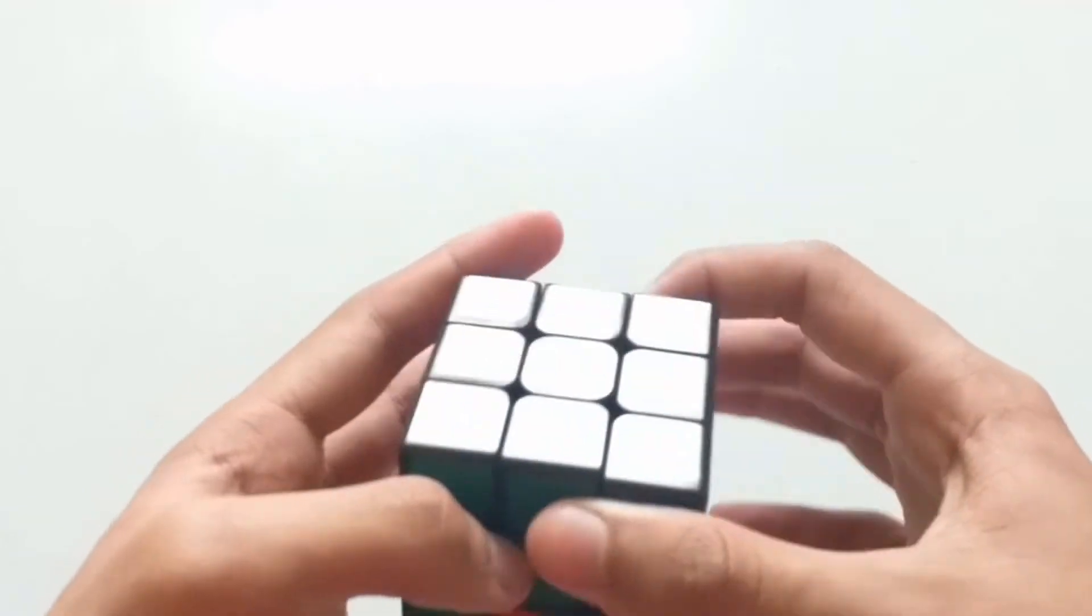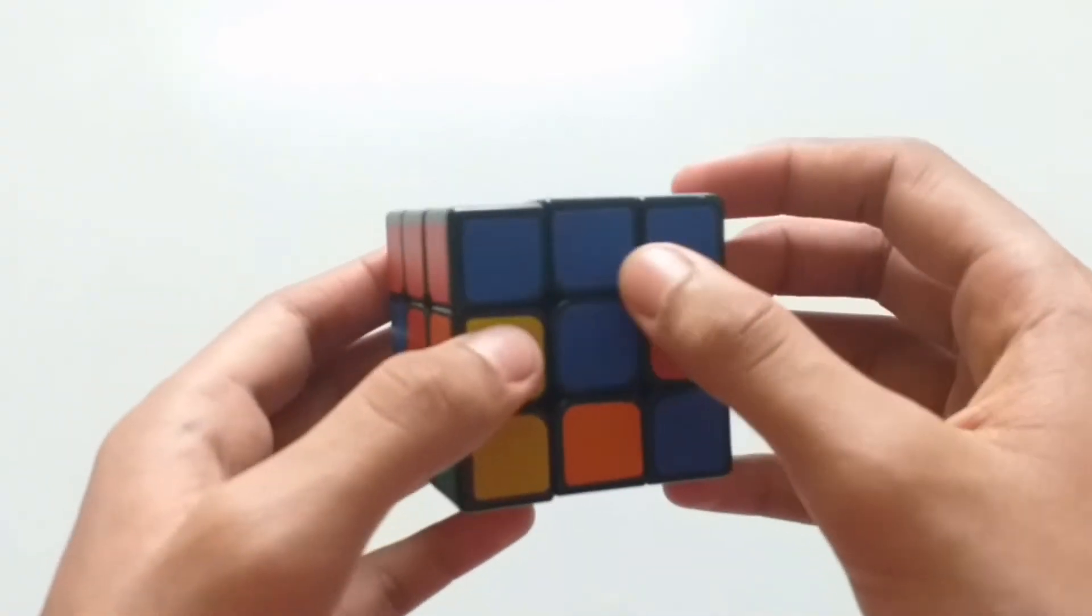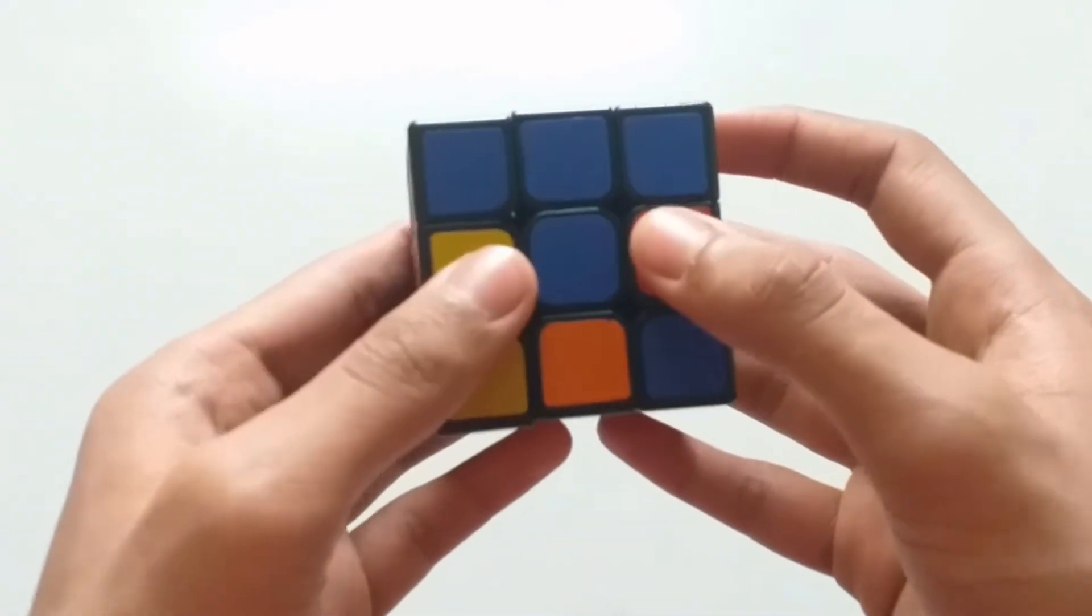After doing this, you will get a T-shape in every color. Now we have to fill the edge pieces in the middle layer.